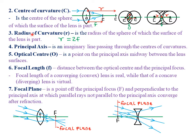We define what we call the radius of curvature, denoted by small r. It is defined as the radius of the sphere of which the surface of the lens is a part. The spheres from which we obtain our concave and convex lenses — the radius of these particular spheres will be equal to the radius of curvature, which is small r. The radius of these spheres from which we obtain either the concave or the convex lenses is what we call the radius of curvature.